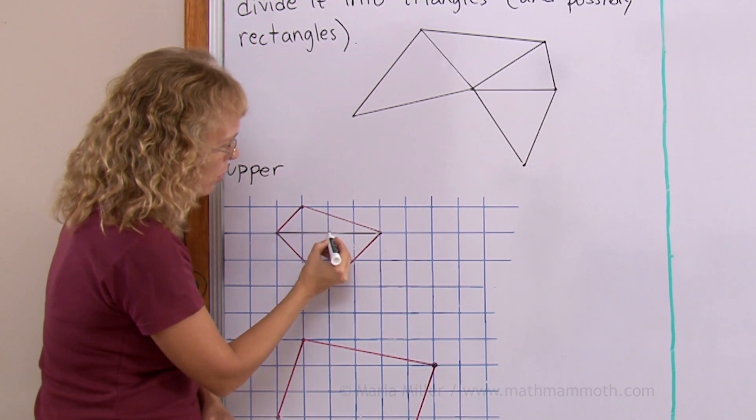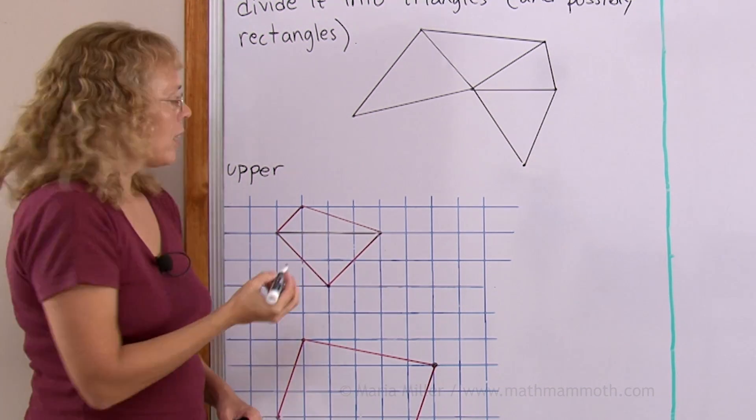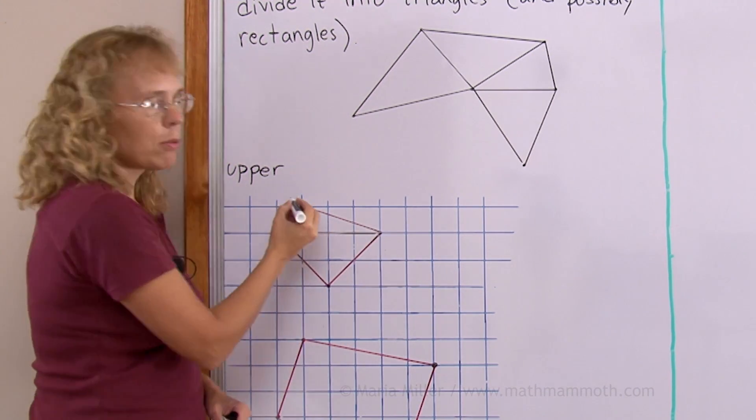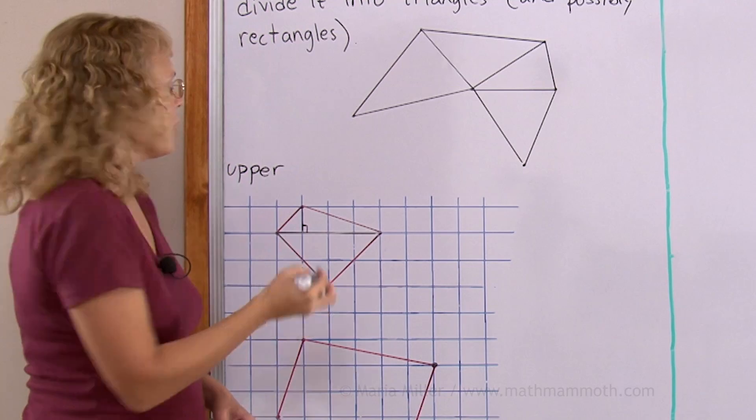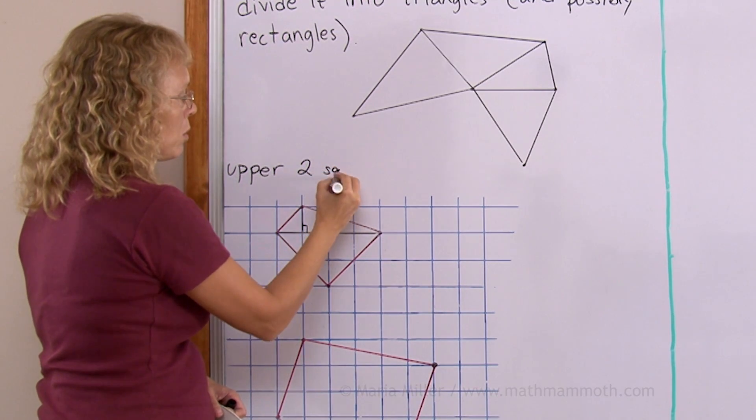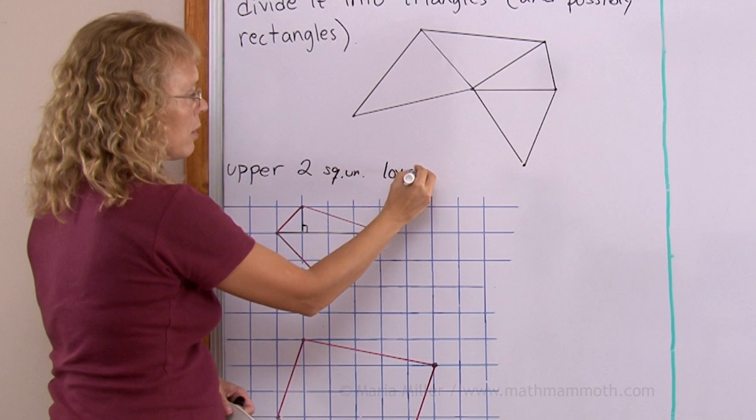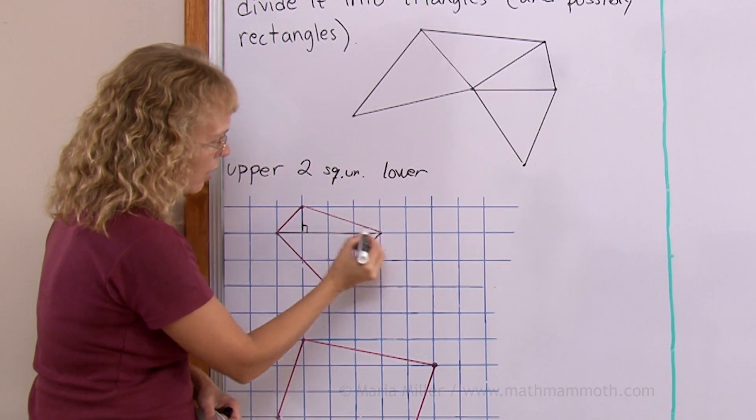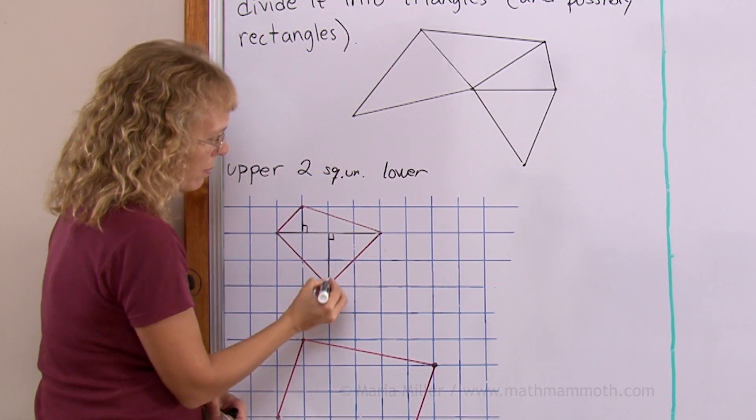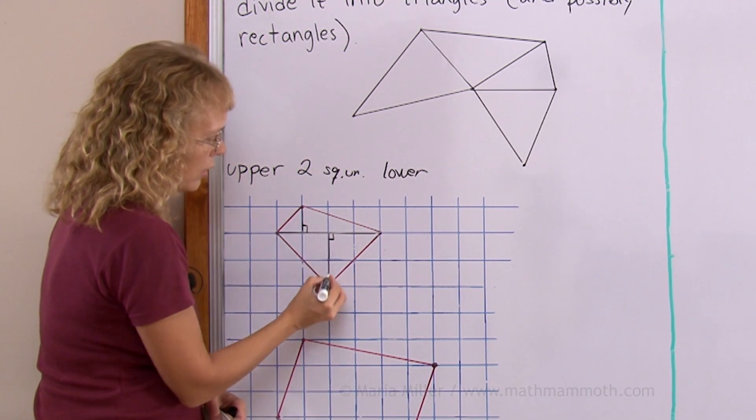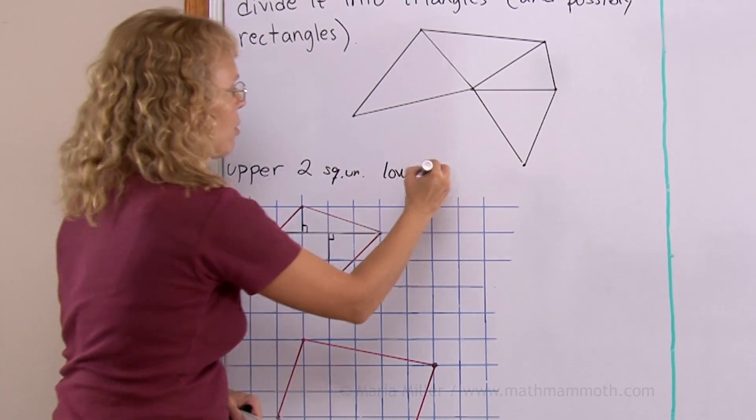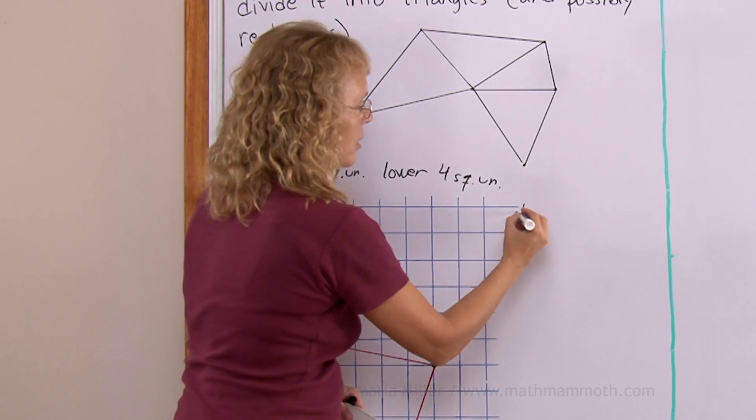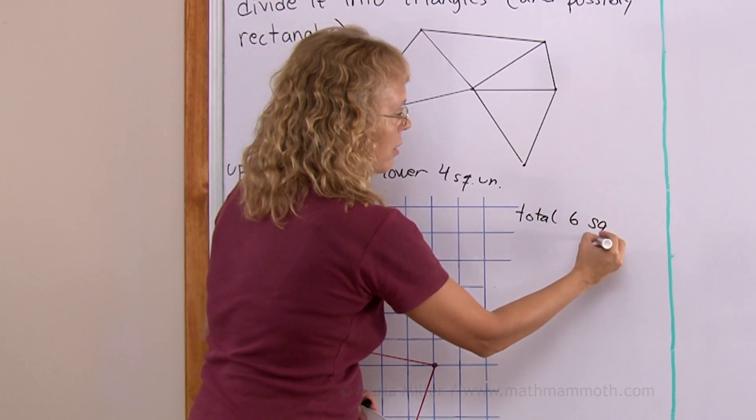The upper triangle has a base of four units and the altitude is one unit. Four times one is four divided by two is two square units. The lower triangle has the same base of four and the altitude is two. So four times two is eight divided by two is four. Now I add two plus four is six. Total six square units.